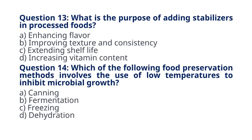Question 13. What is the purpose of adding stabilizers in processed foods? A. Enhancing Flavor B. Improving Texture and Consistency C. Extending Shelf Life D. Increasing Vitamin Content. The correct answer to question 13 is option B. Improving Texture and Consistency. Explanation: stabilizers help maintain the texture and consistency of processed foods by preventing separation or crystallization.